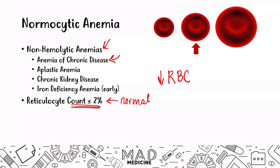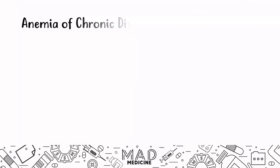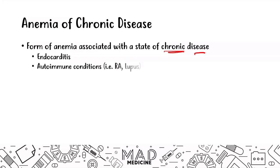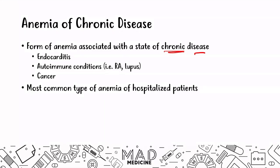Anemia of chronic disease is a form of anemia associated with a state of chronic disease. This could be endocarditis, autoimmune conditions like lupus and rheumatoid arthritis, as well as cancer. This is probably the most common type of anemia in hospitalized patients, and also the most forgotten anemia. Diseases can lead to anemias because you don't have enough red blood cells circulating and providing enough oxygen to the body.